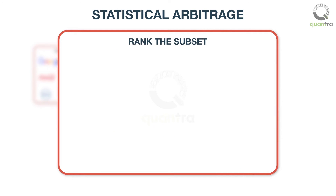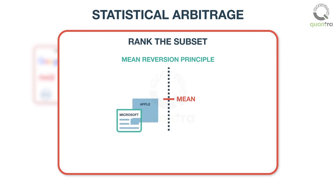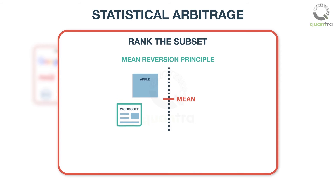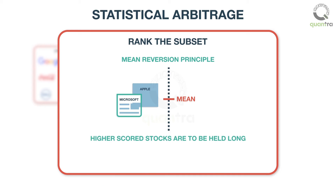Then we rank the subset. Each stock in the subset is given a rank, generally using the mean reversion principle. According to the mean reversion principle, it is expected that individual assets or their linear combination tend to move around the mean. Hence, under-performing stocks are expected to rise and over-performing ones to fall. Although the scoring formula varies depending on which financial parameters are considered, generally under-performing stocks receive higher scores and out-performing stocks receive lower scores. Higher scored stocks are held long, whereas lower scored stocks are shorted.